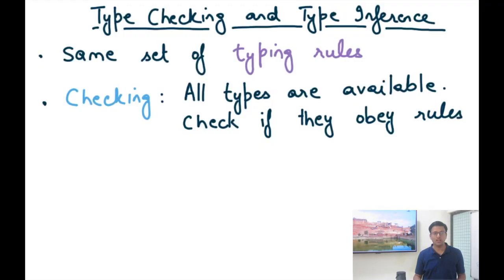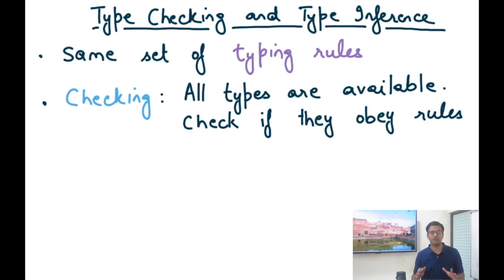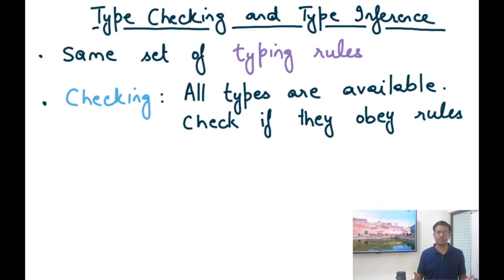We're going to discuss type checking in more detail. Type checking and type inference are quite similar because they rely on the same set of typing rules. Checking involves verifying that a program obeys the rules — you assume that all types are available, so every expression has been annotated with its type, and checking just involves verifying whether those annotated types obey all the typing rules.